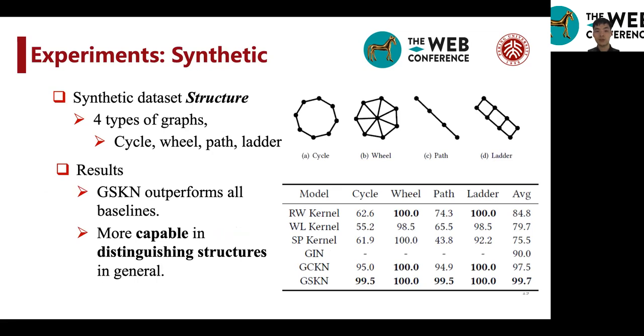And on these graphs, GSKN outperforms all baselines, which shows that GSKN is indeed more capable in distinguishing structures in general.